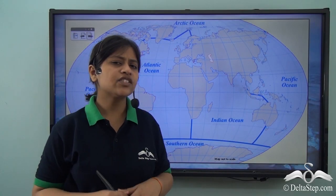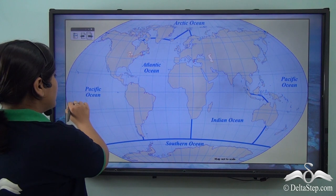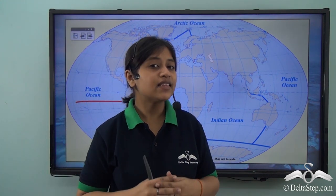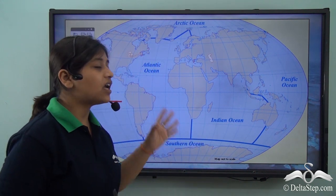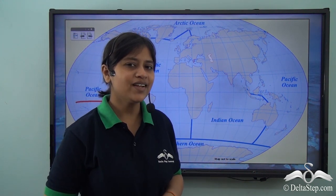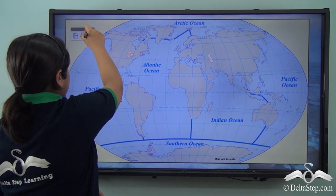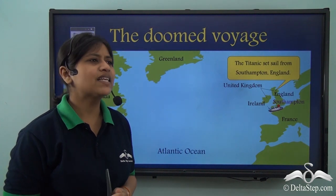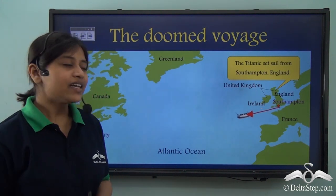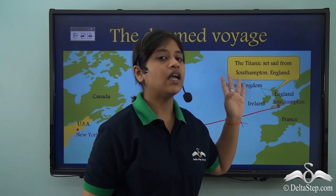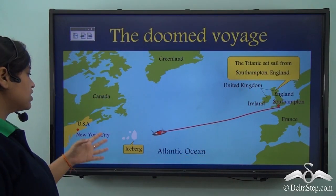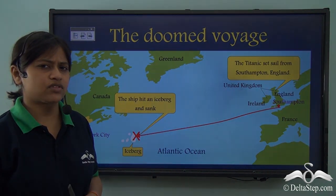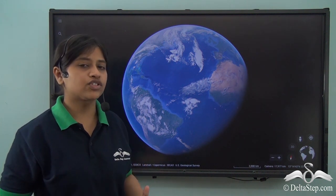As you remember in the last video we learned about the largest ocean of the world, the Pacific Ocean. So today we will learn about the other important oceans of the world. You must have seen the movie Titanic — the Titanic ship sailed from Southampton, England, and was going towards New York City, but somewhere it hit an iceberg and drowned. It happened in the Atlantic Ocean.